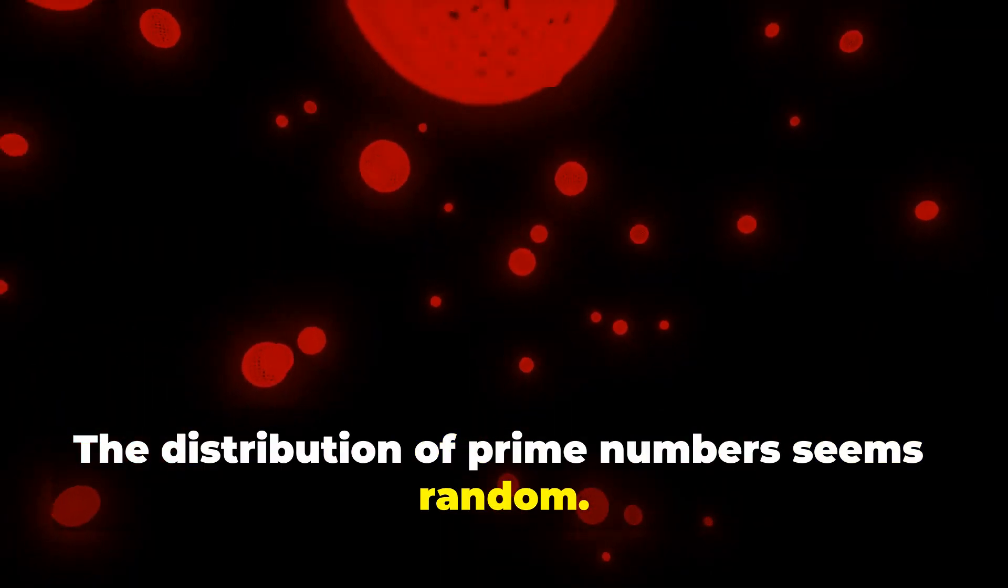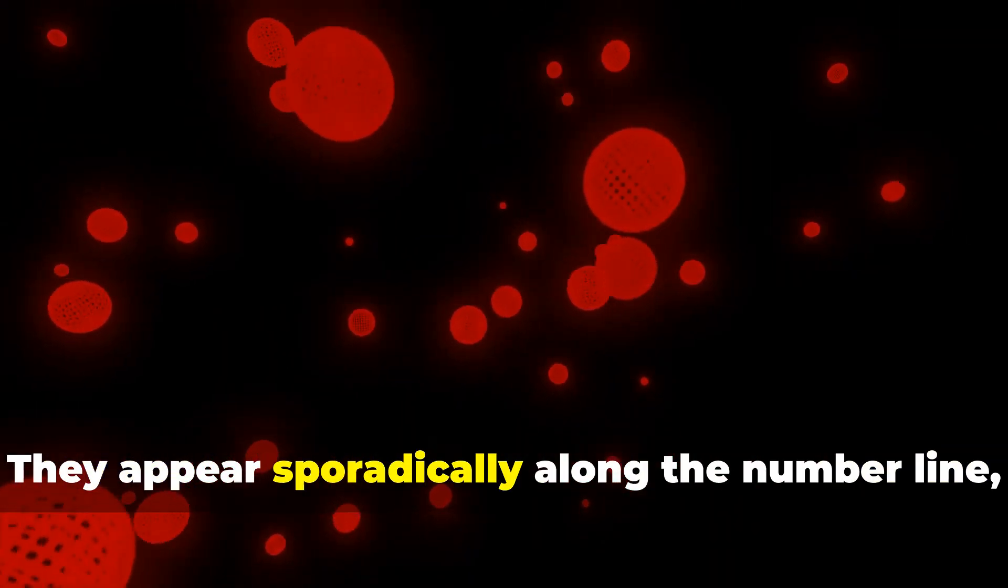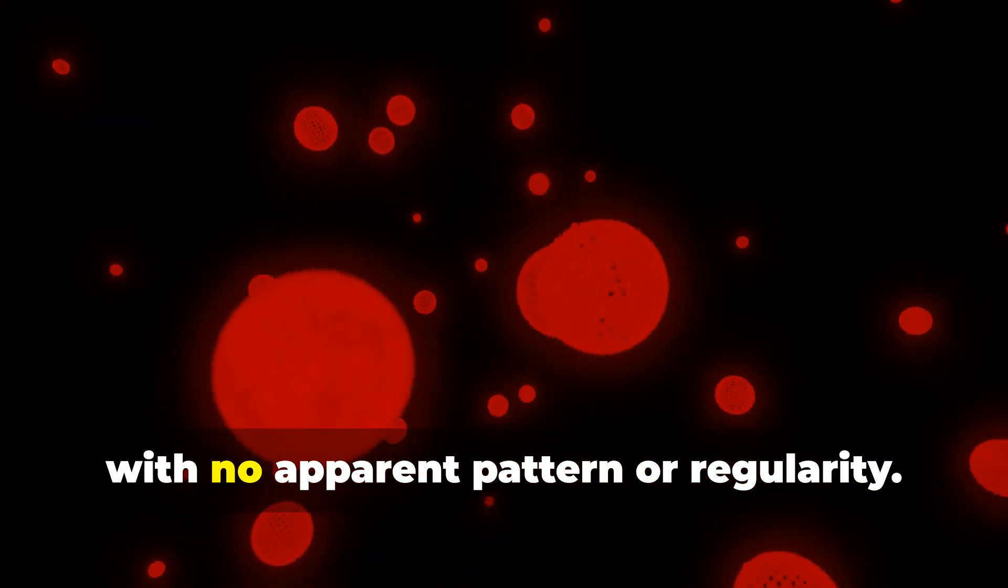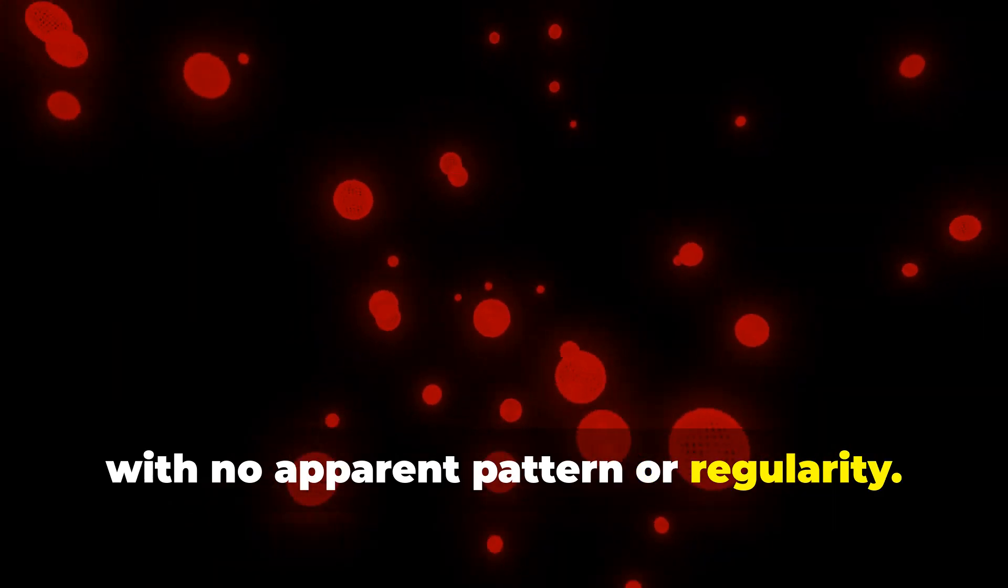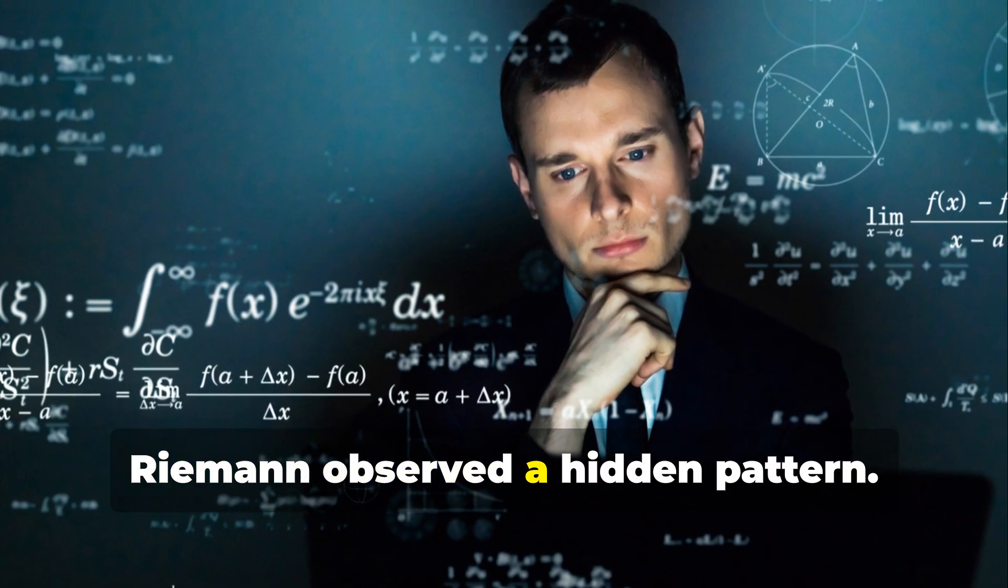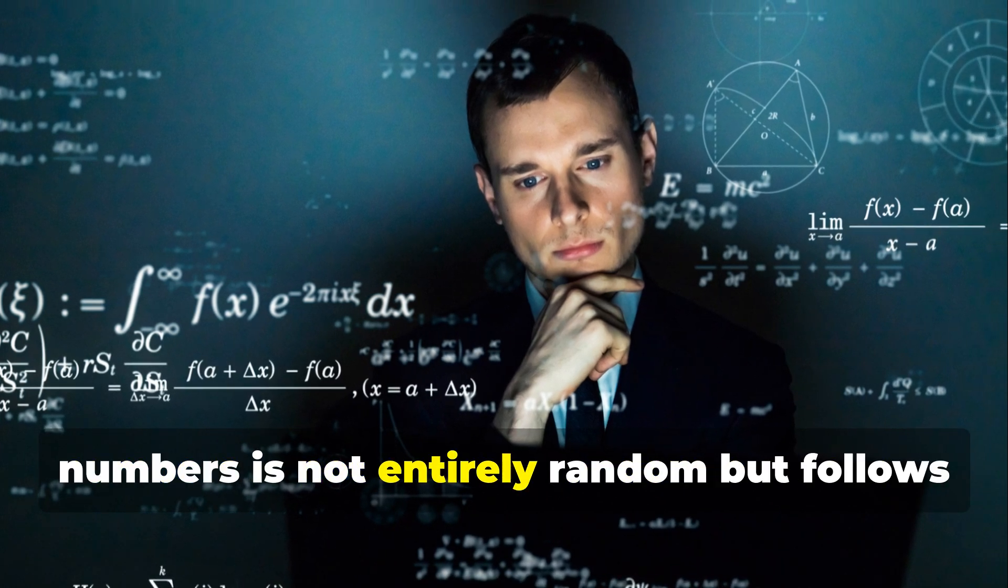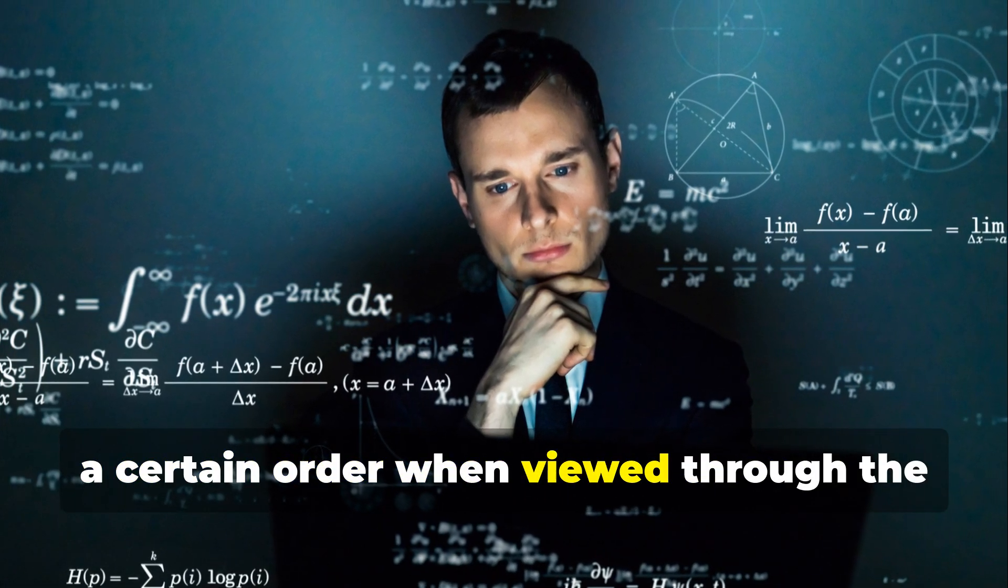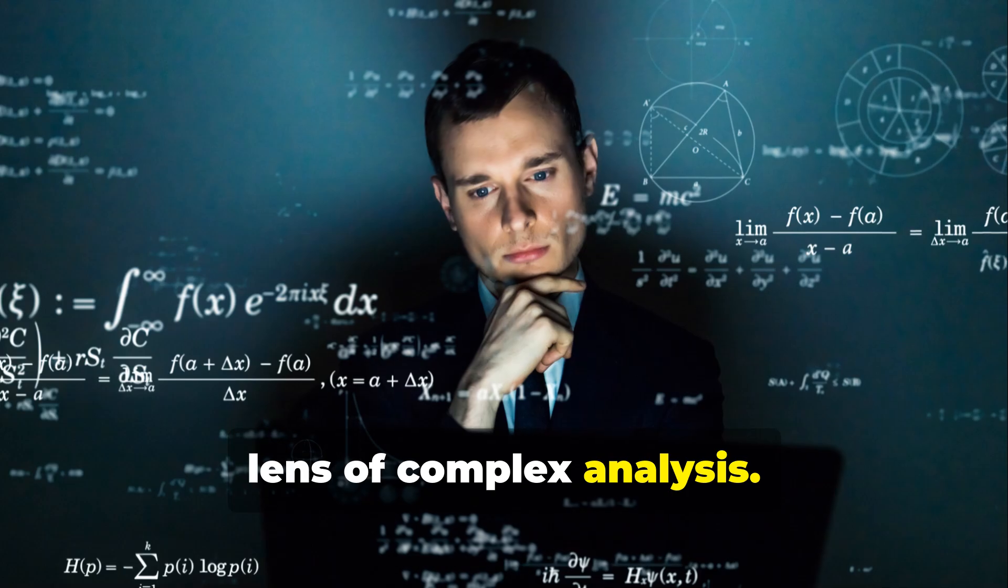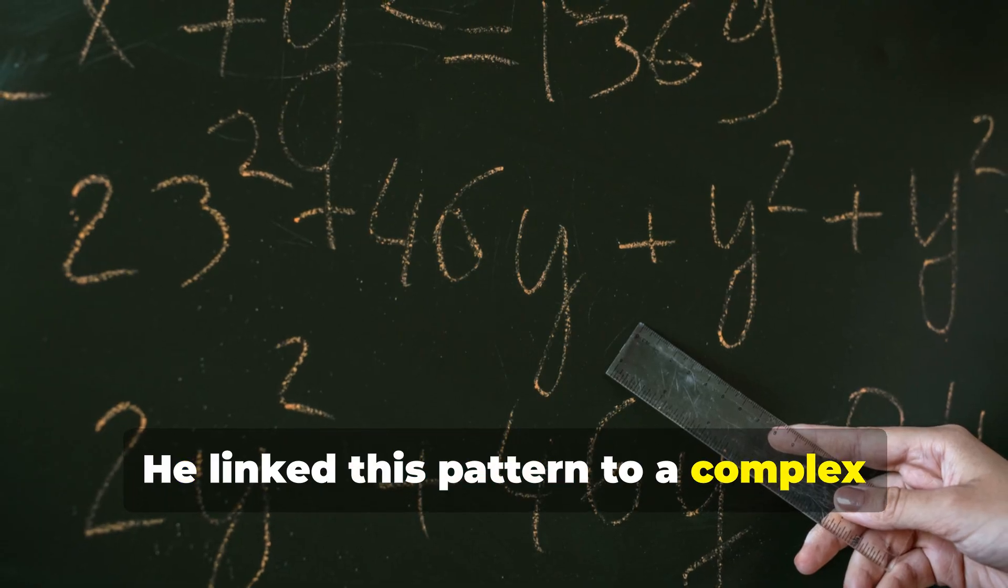The distribution of prime numbers seems random. They appear sporadically along the number line, with no apparent pattern or regularity. However, Riemann observed a hidden pattern. He noticed that the distribution of prime numbers is not entirely random, but follows a certain order when viewed through the lens of complex analysis.